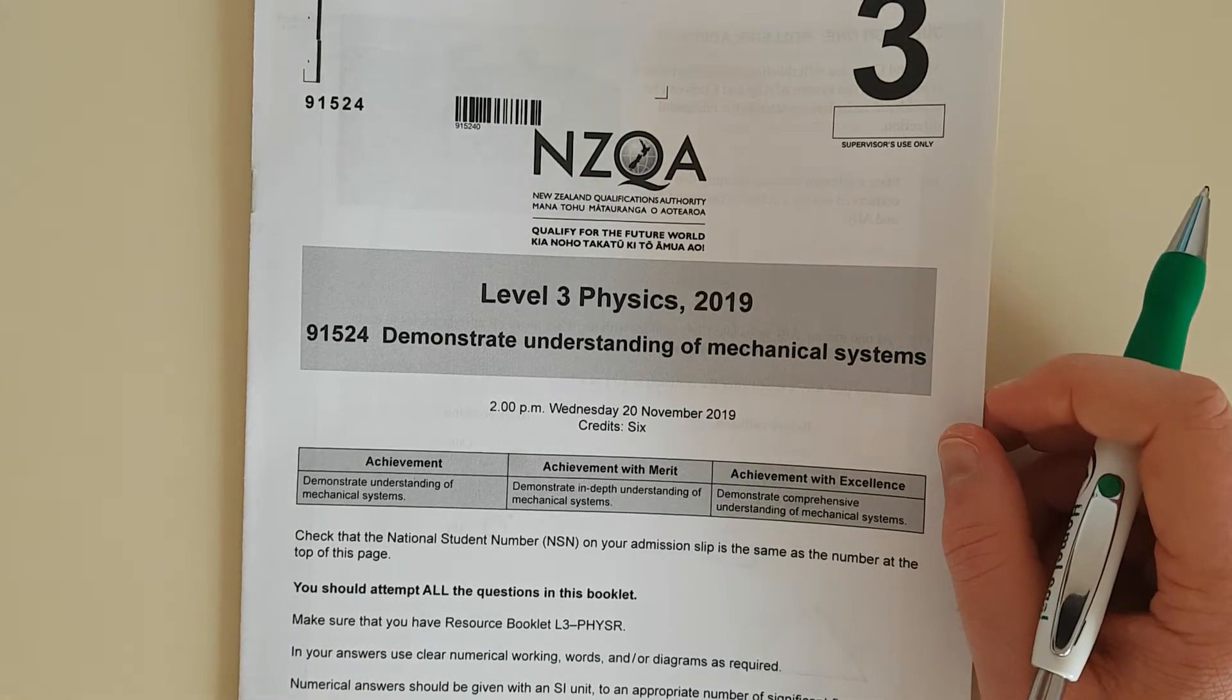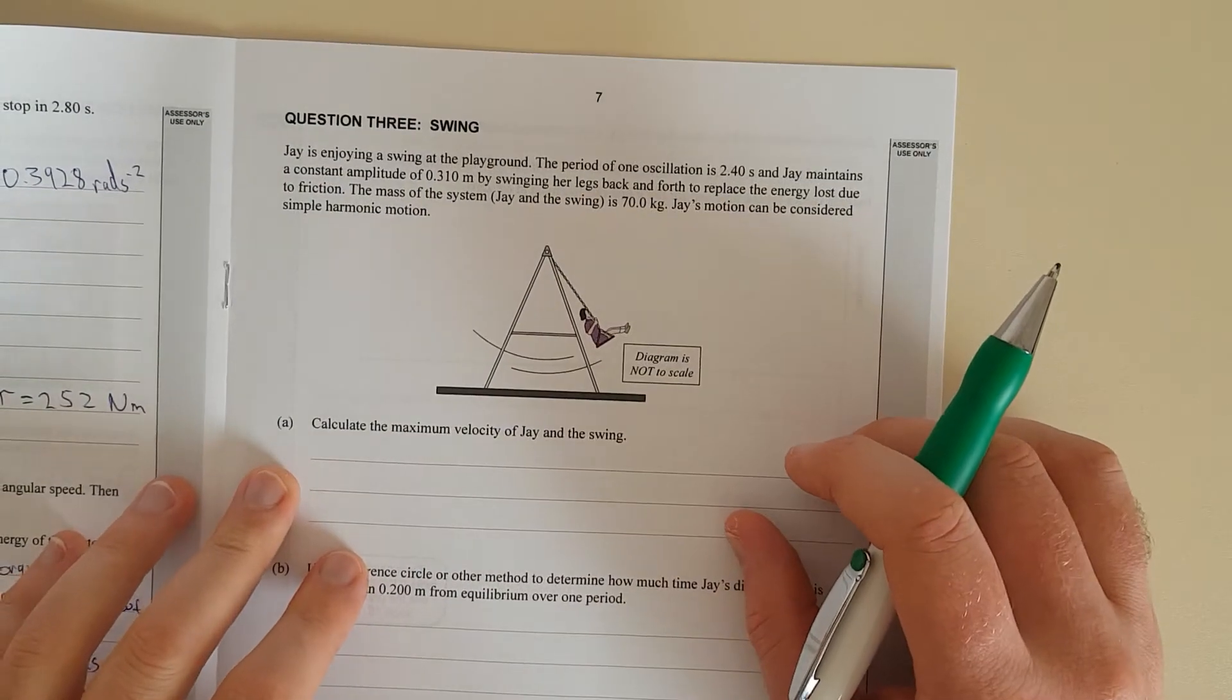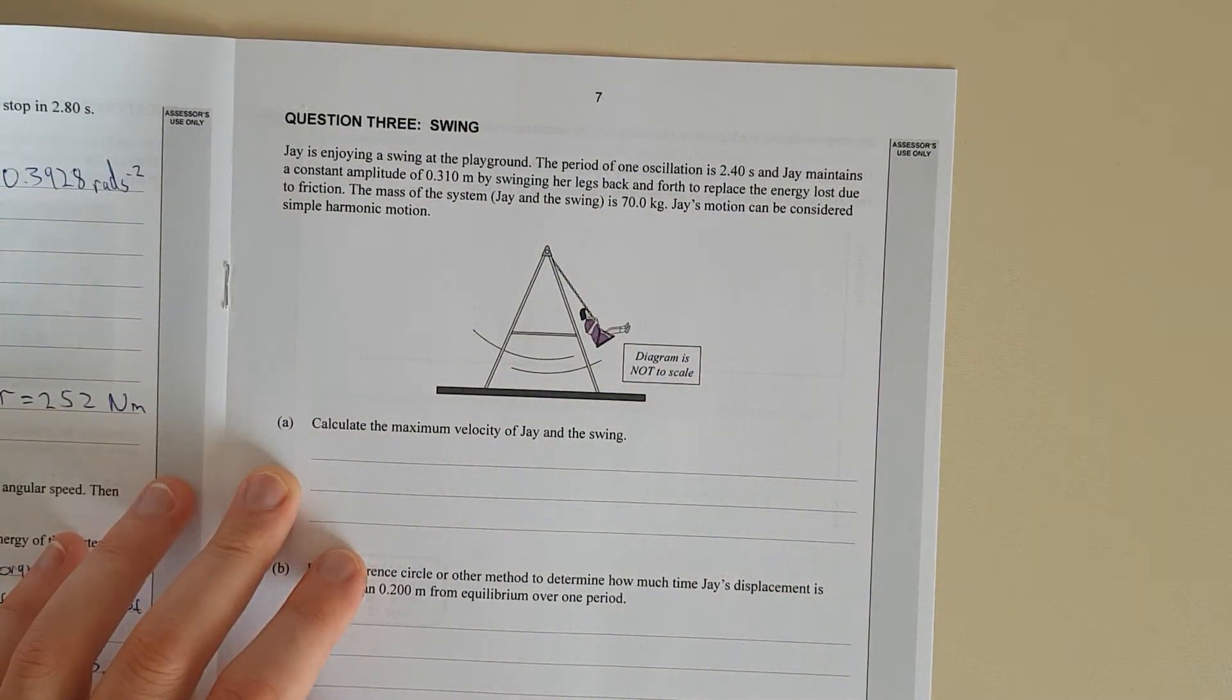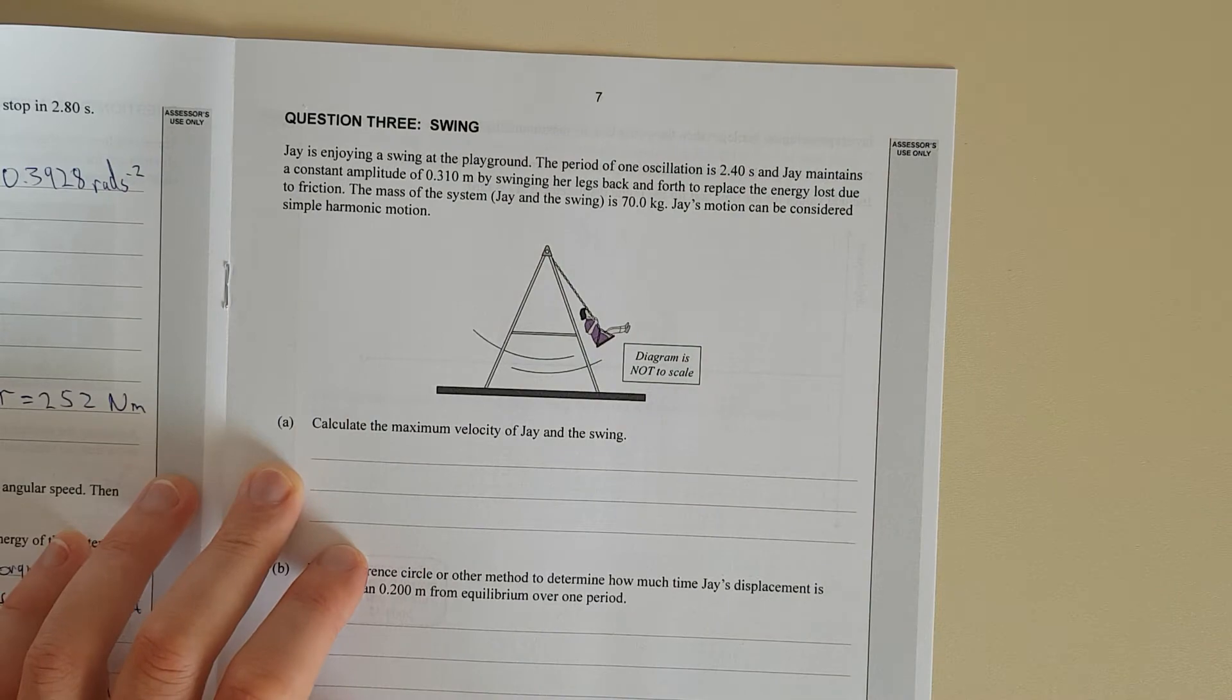In this video I'll be working through question 3 of the 2019 Level 3 Mechanics exam. Alright, question 3. Jay is enjoying the swing of the playground. The period of one oscillation is 2.4 seconds.